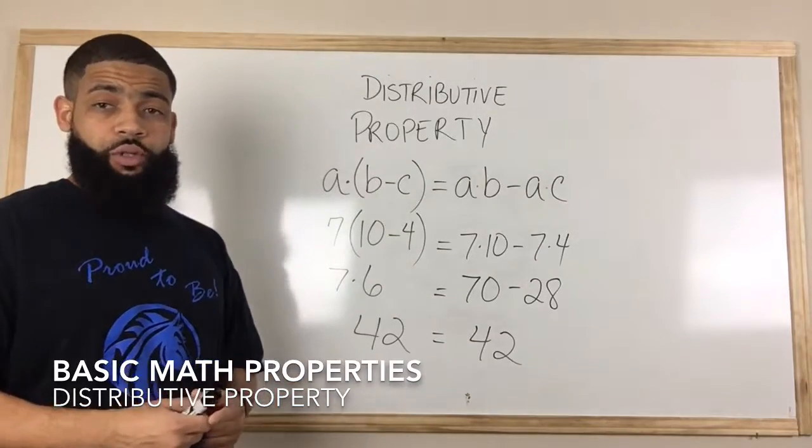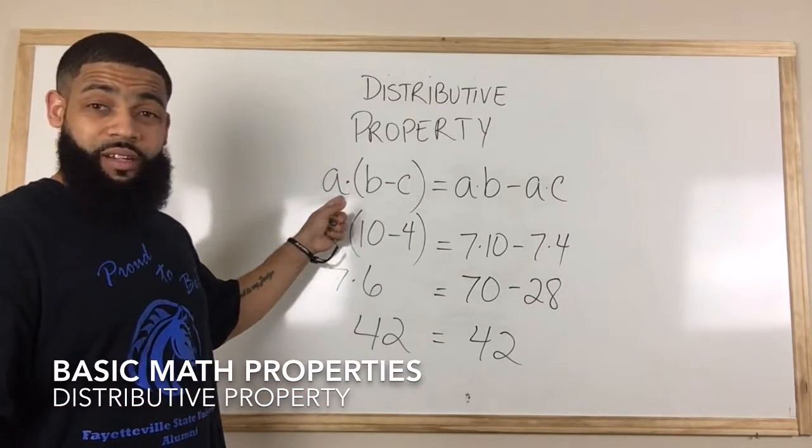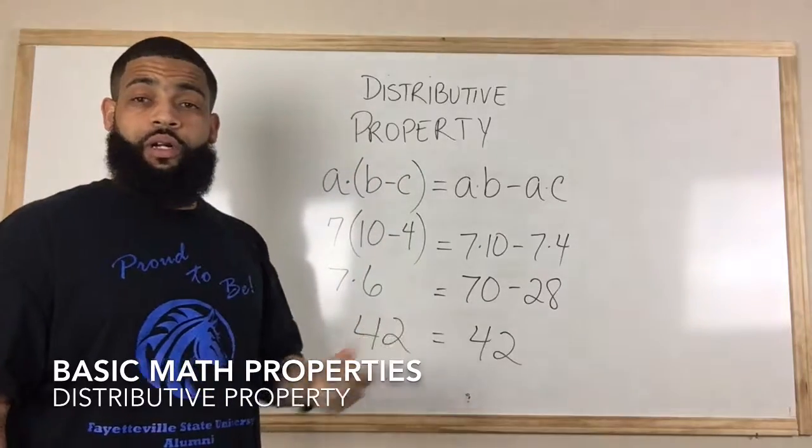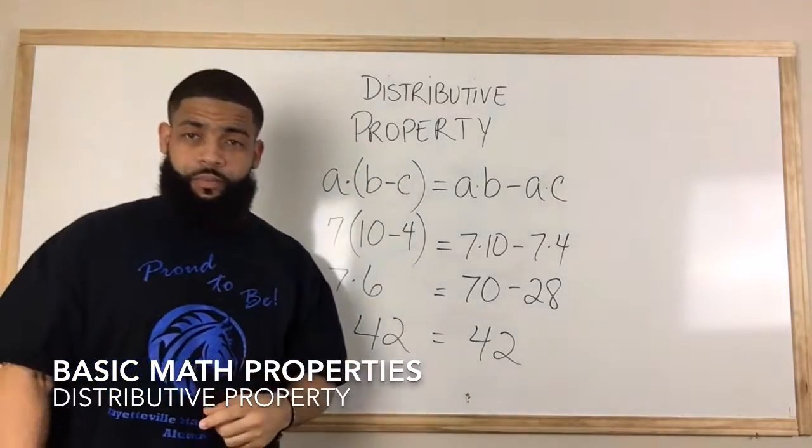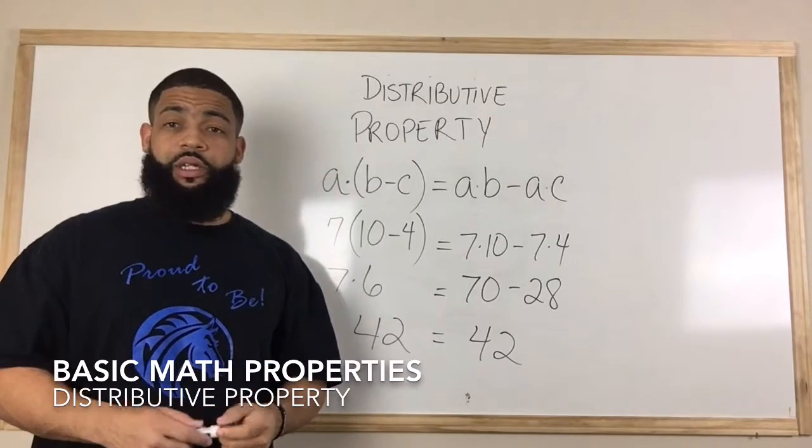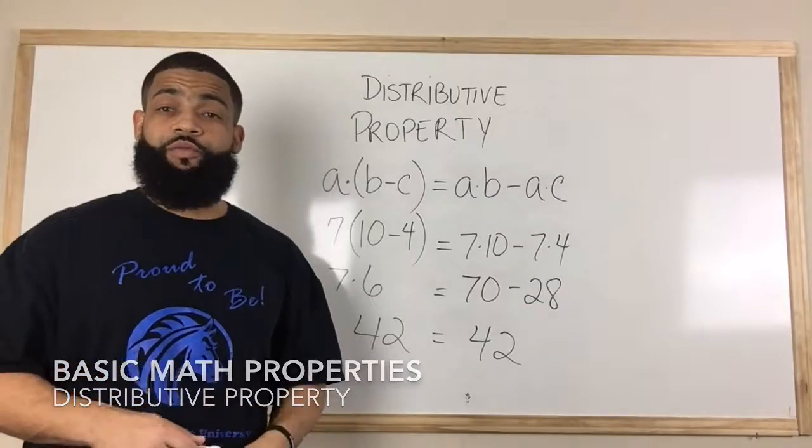This is the distributive property. All we're doing is taking the quantity outside of the parentheses and distributing it to whatever quantities are inside the parentheses. You may see some cases where there are more than two numbers inside the parentheses, but that is the distributive property.